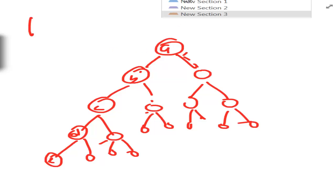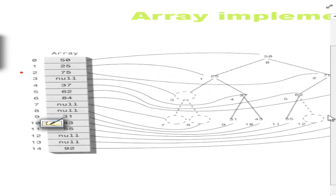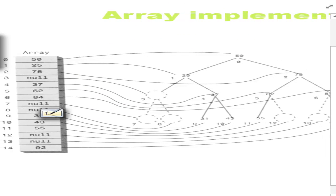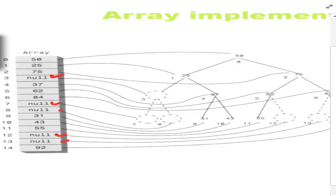Let me take another example. We have nodes 50, 25, 75. Index 3 is missing, and indices 7 and 8 are missing, so at positions 3, 7, and 8 we put nulls. Indices 12 and 13 are also nulls. By this structure, we can tell who is the child, who is the parent, who is the left child, and who is the right child of a particular node.